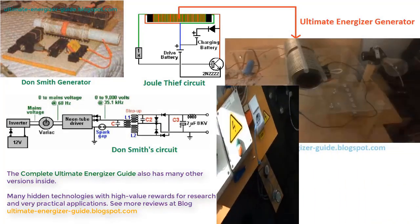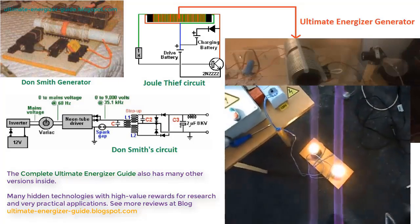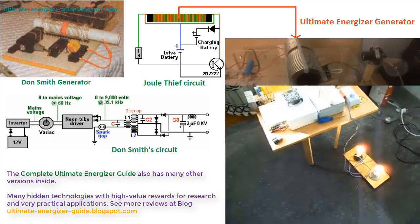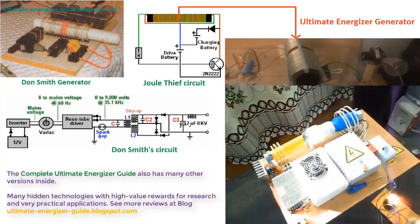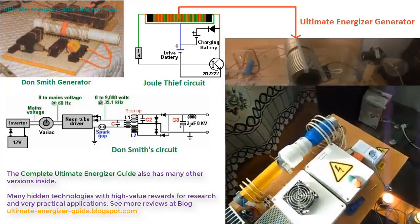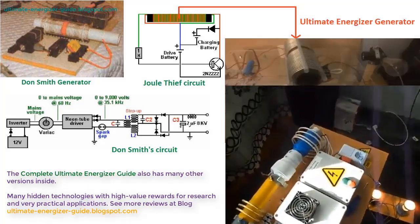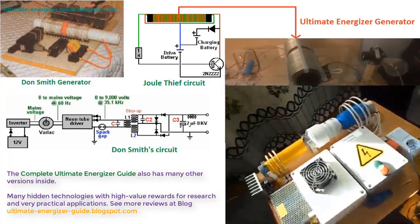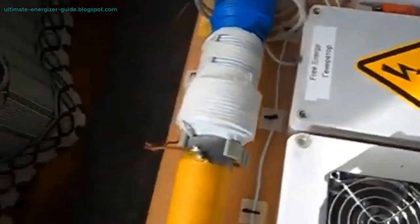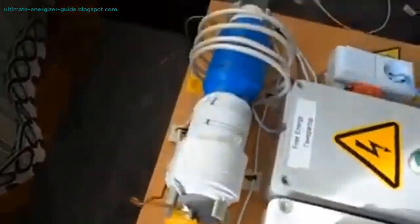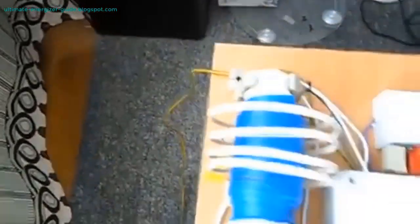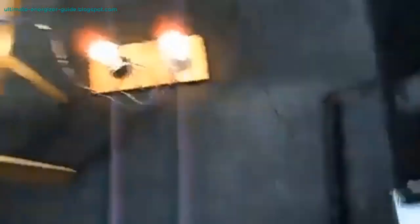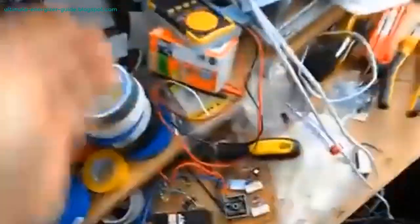The Joule Thief circuit and Don Smith's circuit, although capable of producing output energy greater than input energy, are primarily intended for free energy researchers. Those who demonstrate these circuits often do not share the secrets of generating electricity to power household appliances. The Complete Ultimate Energizer Guide reveals the secrets of generating electricity using electronic components and coils, with power output depending on the system's expansion. This sets it apart from the Joule Thief circuit and Don Smith's circuit, which are commonly shared online. Moreover, the circuit described in the Ultimate Energizer Guide is unique and distinct.